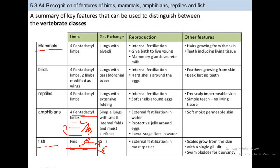Reptiles also have four pentadactyl limbs. In birds (class Aves), there are four pentadactyl limbs but the two upper limbs are modified into wings. In the case of mammals — we are examples of mammals — they have four pentadactyl limbs. The next feature is gaseous exchange: fishes have gills for the exchange of gases.